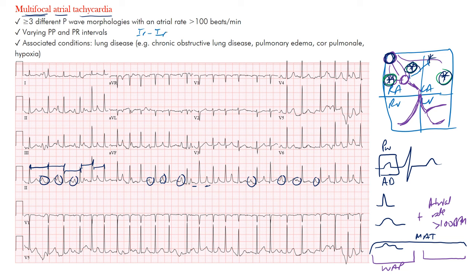This is an irregularly irregular rhythm similar to atrial fibrillation — remember, A-fib is still the most common irregularly irregular rhythm, but MAT is certainly one to keep in mind. The rate is fast here. Since some P-waves are buried within the QRS complex or end of the T-wave, it may be hard to count them all, so you can count the QRS complexes and multiply by six to get the rate — which is obviously greater than 100 beats per minute.